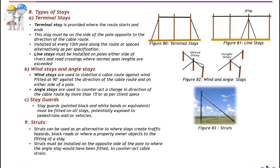Types of stays. In this slide we will talk about different types of stays. Number one: terminal stays — terminal stays are provided where the route starts and ends. This stay must be on the side of the pole opposite to the direction of the cable route. Installed at every 30th pole along the route or spaced alternatively as per specifications. Line stays must be installed on poles either side of rivers or road crossings where normal span lengths are exceeded.